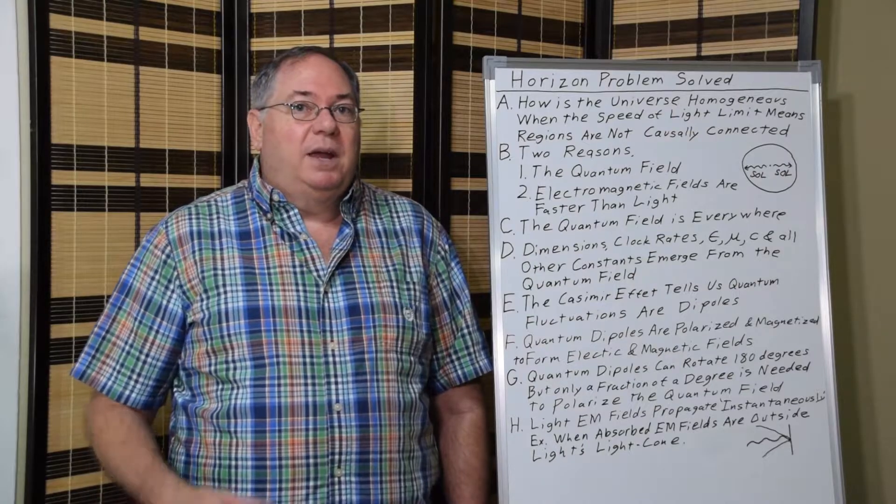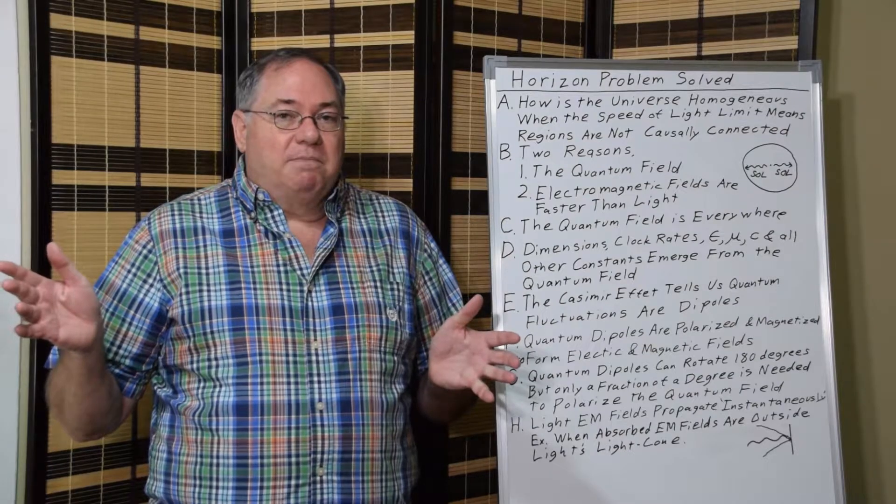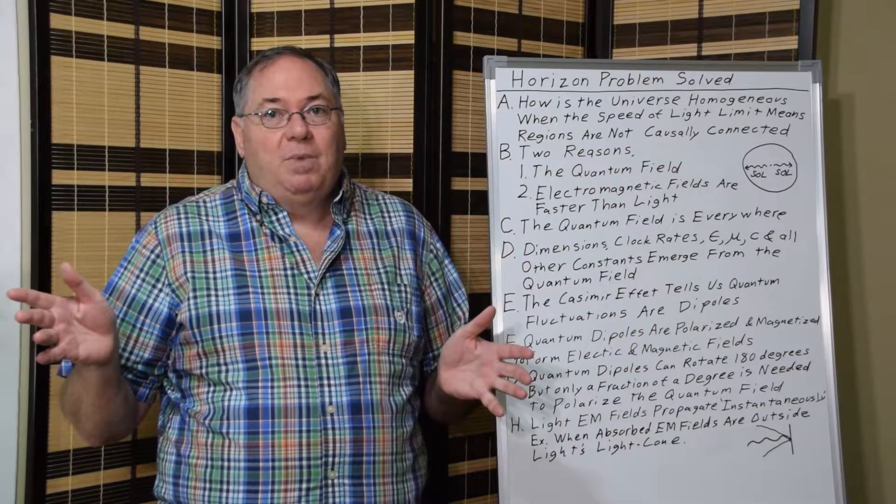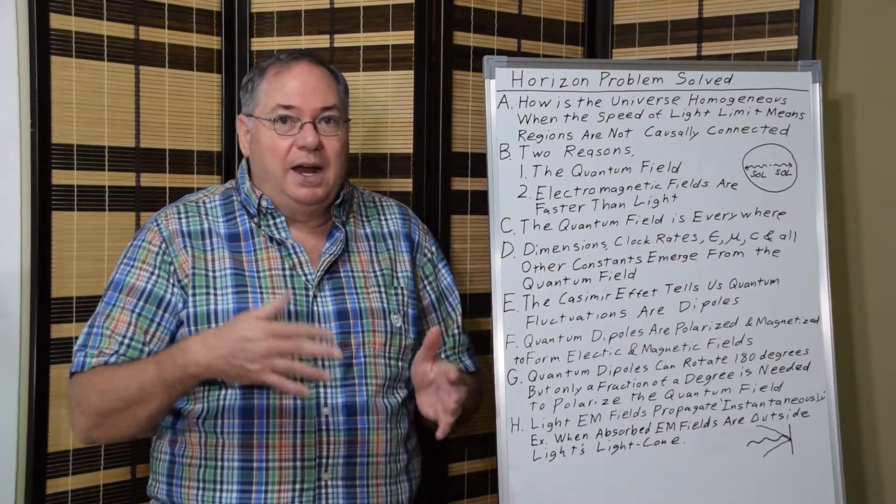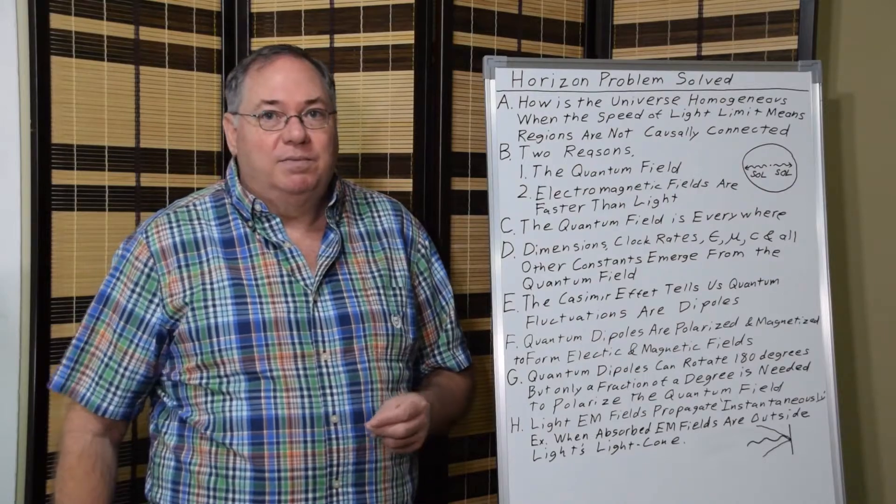So, electric and magnetic fields propagate much faster than the speed of light, which causes homogeneity throughout the quantum field. And contributes to the underlying homogeneity because all the physical constants arise from the quantum field to begin with.